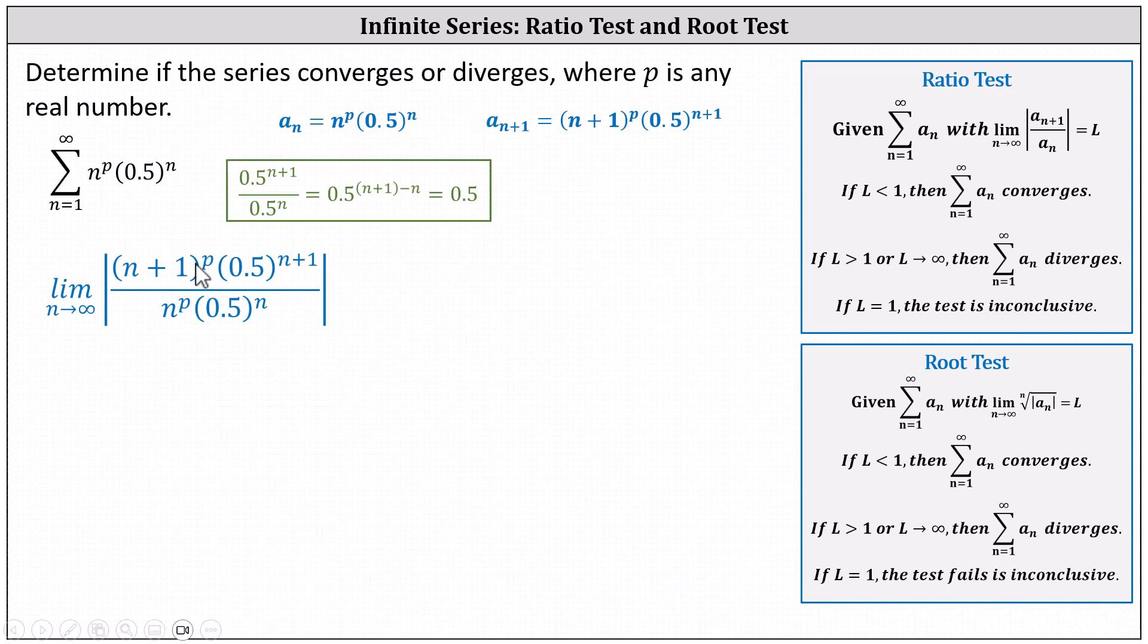Also notice n plus 1 as well as n are raised to the power of p. Let's write this as a quotient to the power of p. And we can also drop the absolute value because n is always positive.